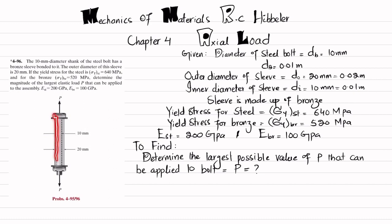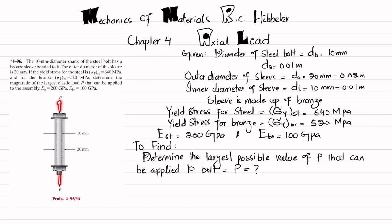We need to determine the magnitude of the largest elastic load P that can be applied to the assembly. The steel bolt has a diameter of 10 millimeter. The bronze sleeve has an outer diameter of 20 millimeter and inner diameter of 10 millimeter, bonded to the bolt. The yield stress for steel is 640 megapascal, for bronze is 520 megapascal, with the given moduli of elasticity.